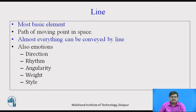The first and foremost is Line. It is the most basic element of design. We can define line as the path of a moving point in space, or locus of points. Almost everything can be conveyed by line — direction, rhythm, angularity, weight, and style. All these emotions and few more can be conveyed by a single line only by changing its weight, i.e. thickness, its direction, or inclination.